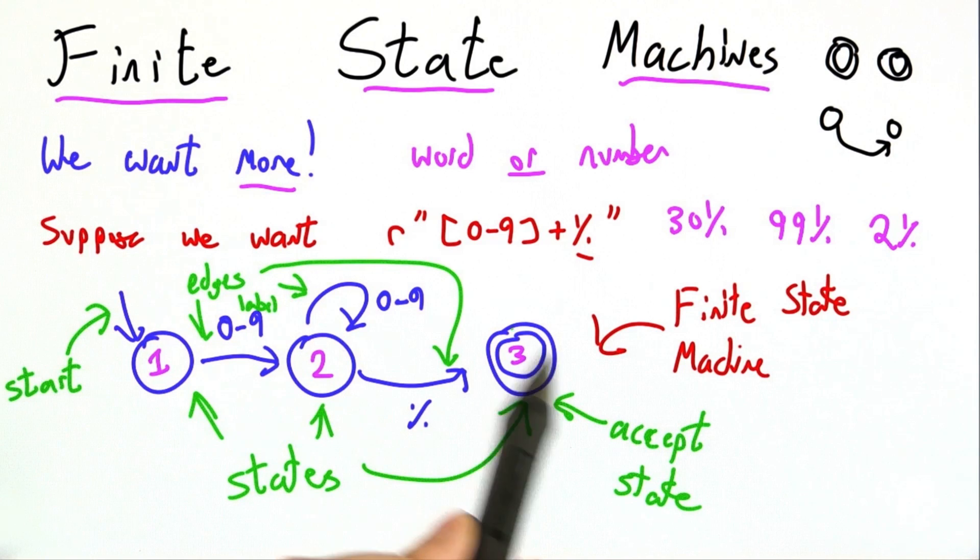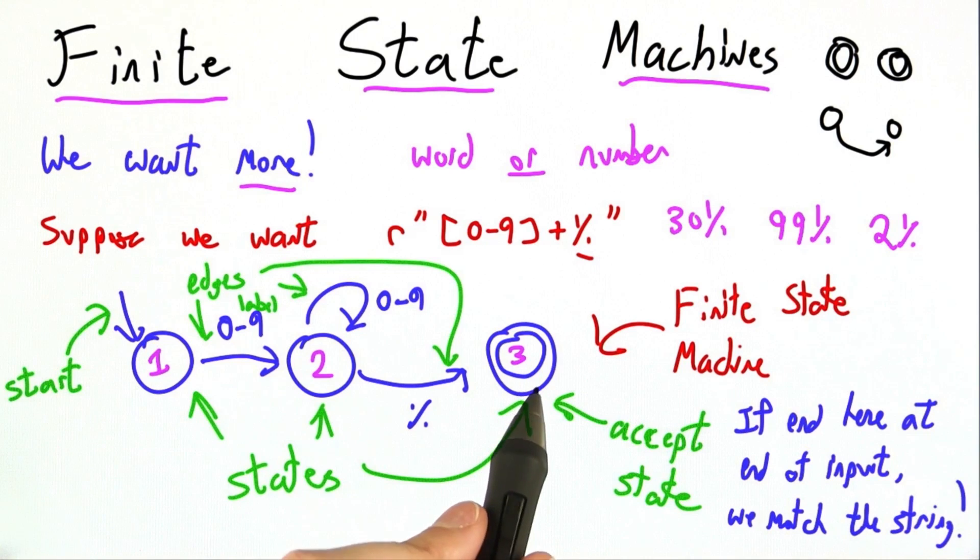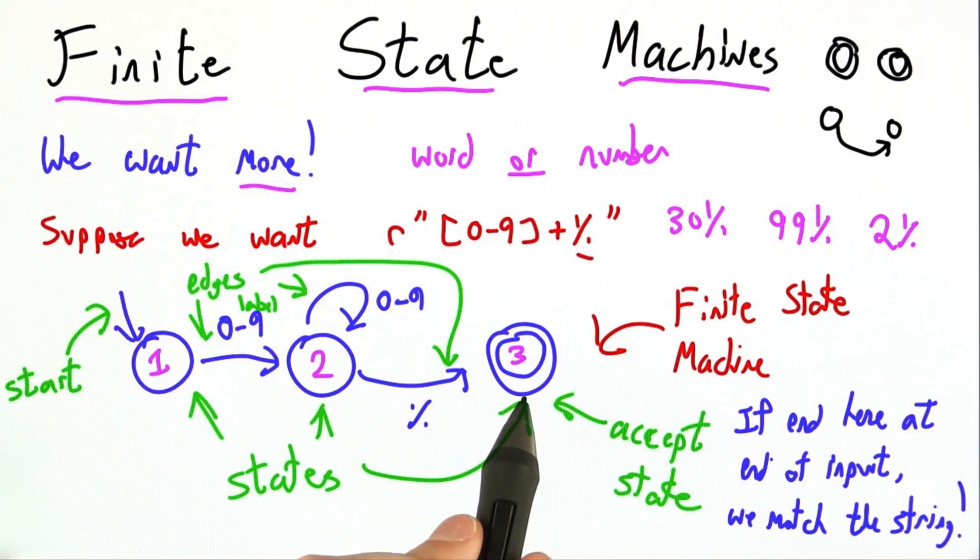Finally, you'll notice that one of my states has a double circle. That's an accepting state. If we end up in an accepting state at the end of the input, this finite state machine matches the given string.